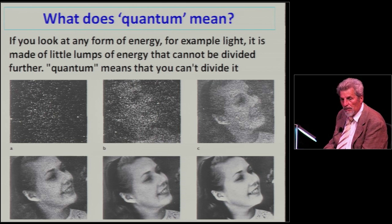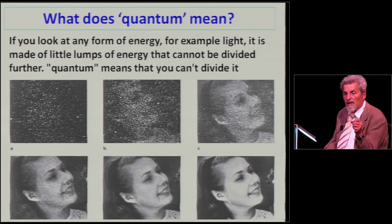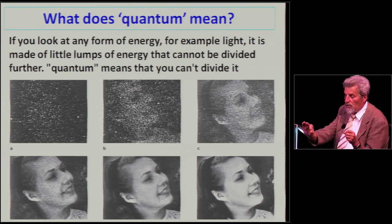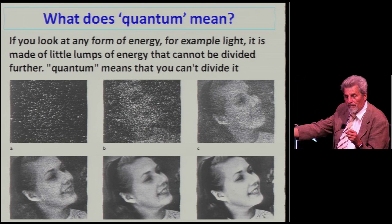And this is really the origin of the name quantum mechanics. The origin of the name comes from the fact that if you look at all forms of energy, for example light, and you do the following experiment: you take a source of light like a lamp, and you take a screen, and in the screen you make a hole, and you make the light go through the hole and come to a photographic plate.